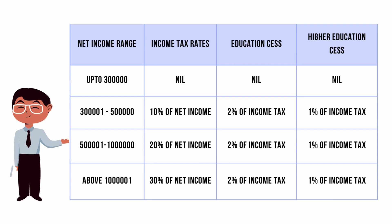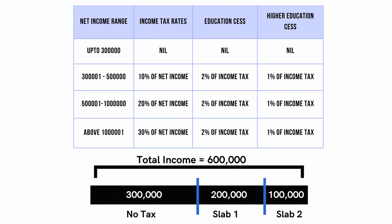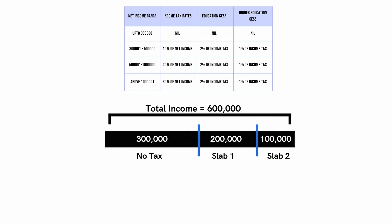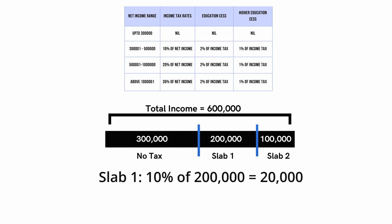You must note that the cess is being charged on the total tax and not the total income. The tricky thing here is that if your income is above 500,000 — say it's something like 600,000 — then we have to calculate tax for two different slabs. For slab one, you have an income which is more than 300,000 and is also beyond 500,000.